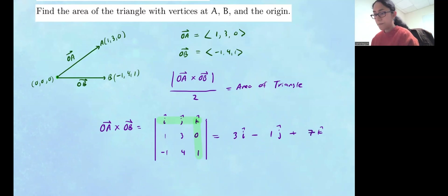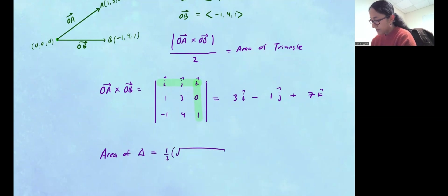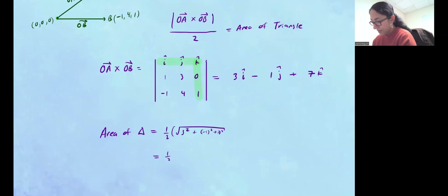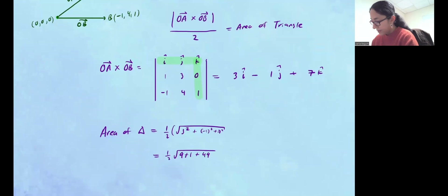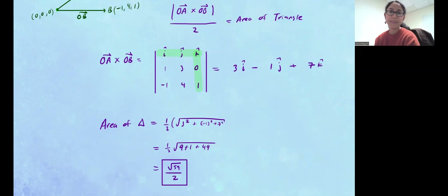So the cross product vector, perpendicular to both OA and OB, is (3, -1, 7). Now we find the magnitude. The area of the triangle is one half times the square root of 3 squared plus negative 1 squared plus 7 squared, which is one half times the square root of 9 plus 1 plus 49, giving us the square root of 59 divided by 2. So that is the area of the triangle. I hope this helps!